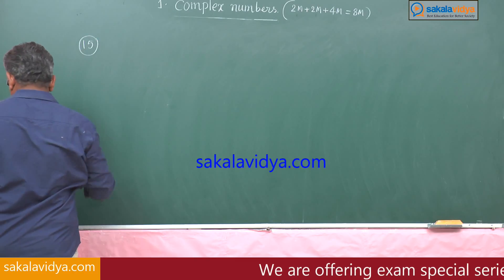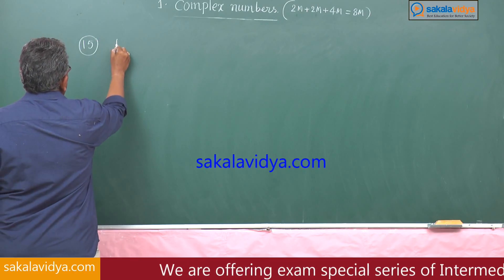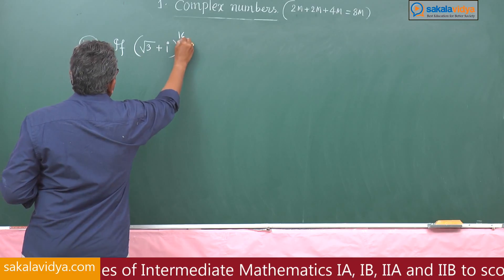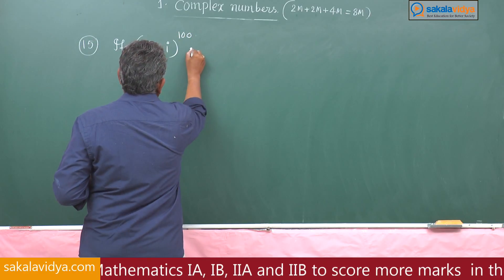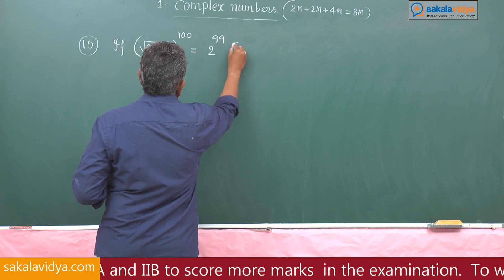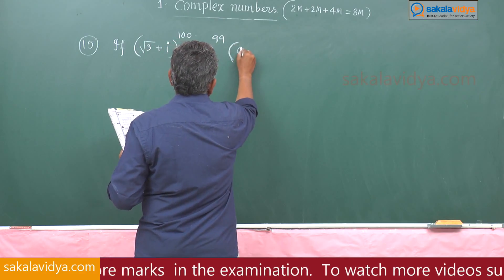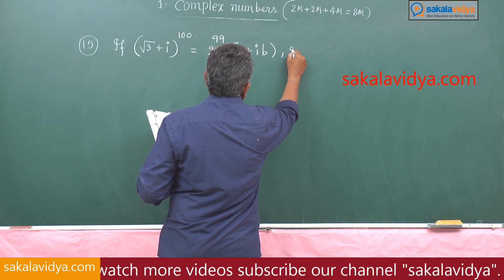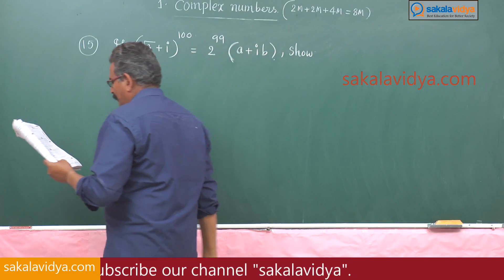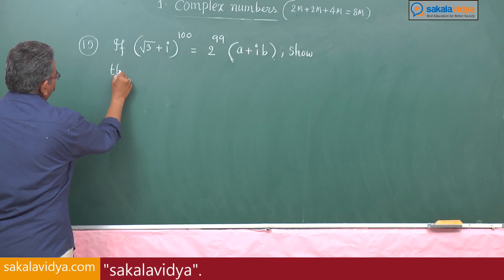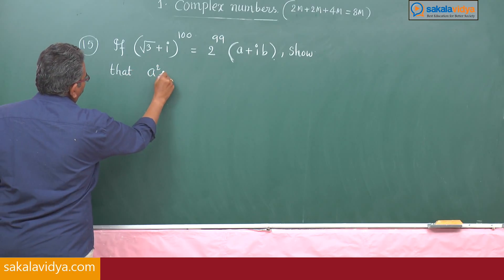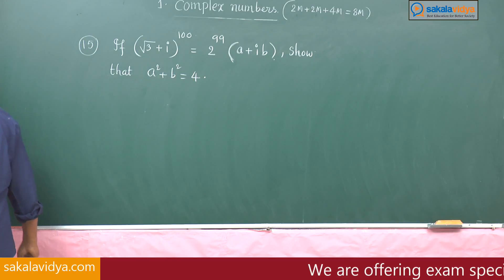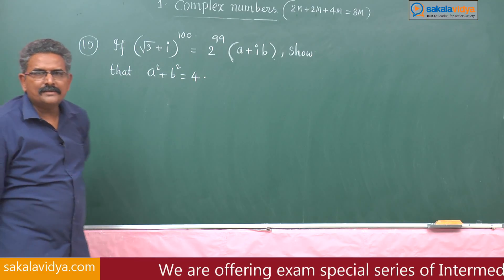Next, 15th problem. If (√3 + i)^100 = 2^99 · (a + ib), show that a² + b² = 4.